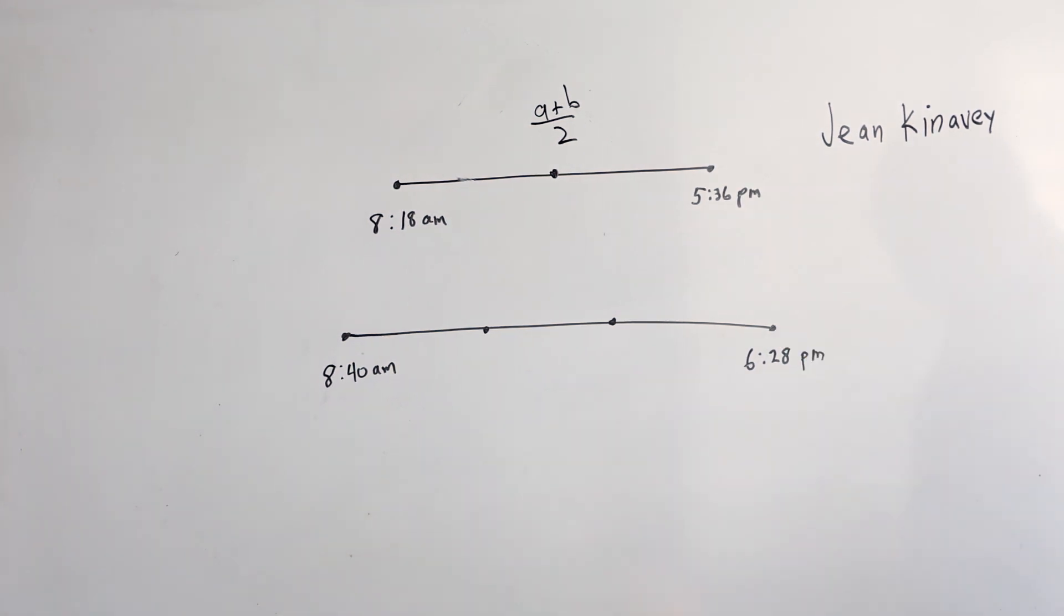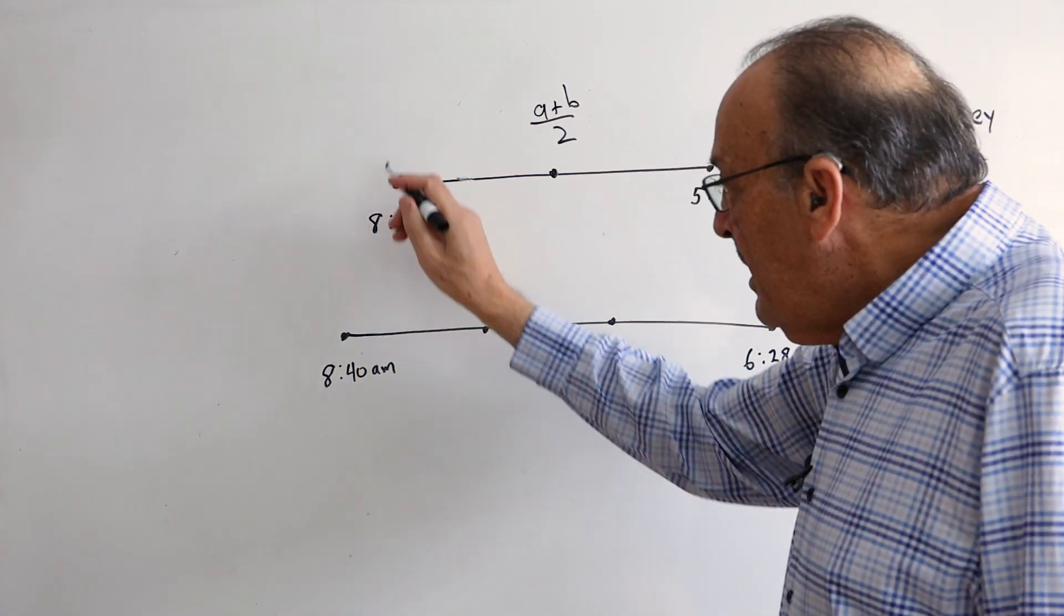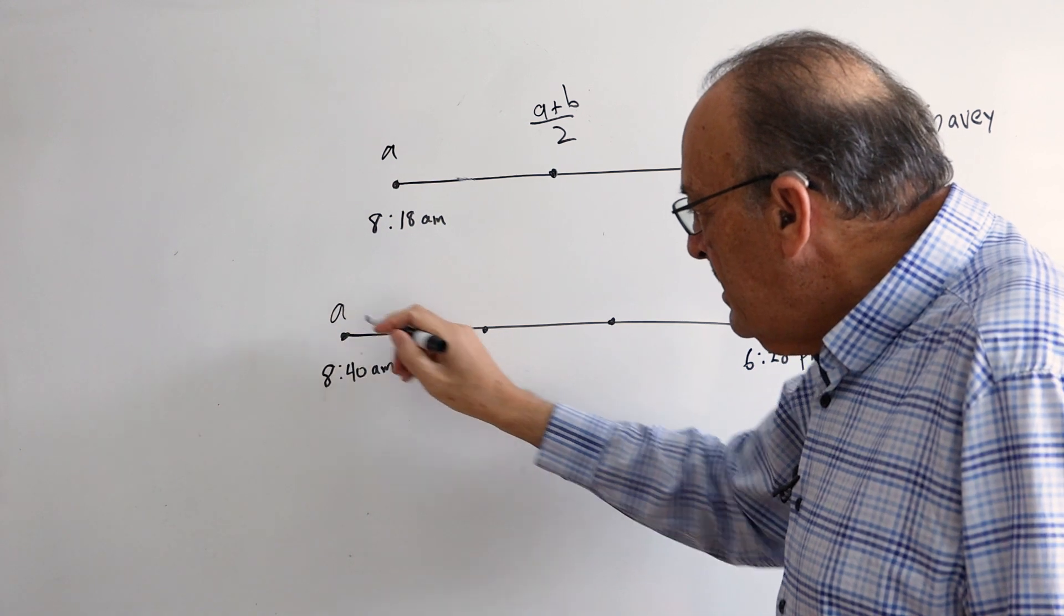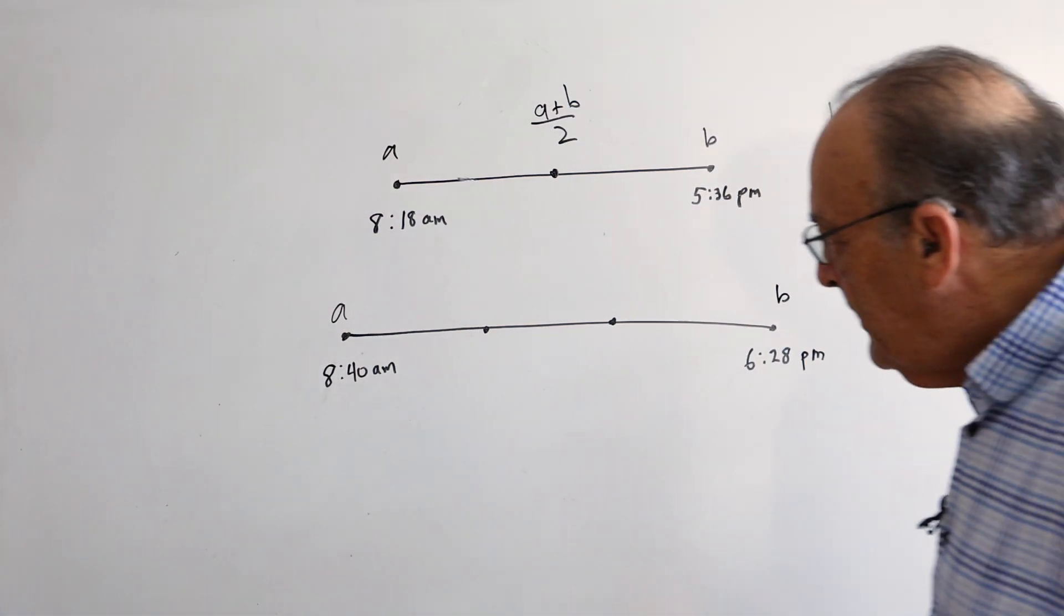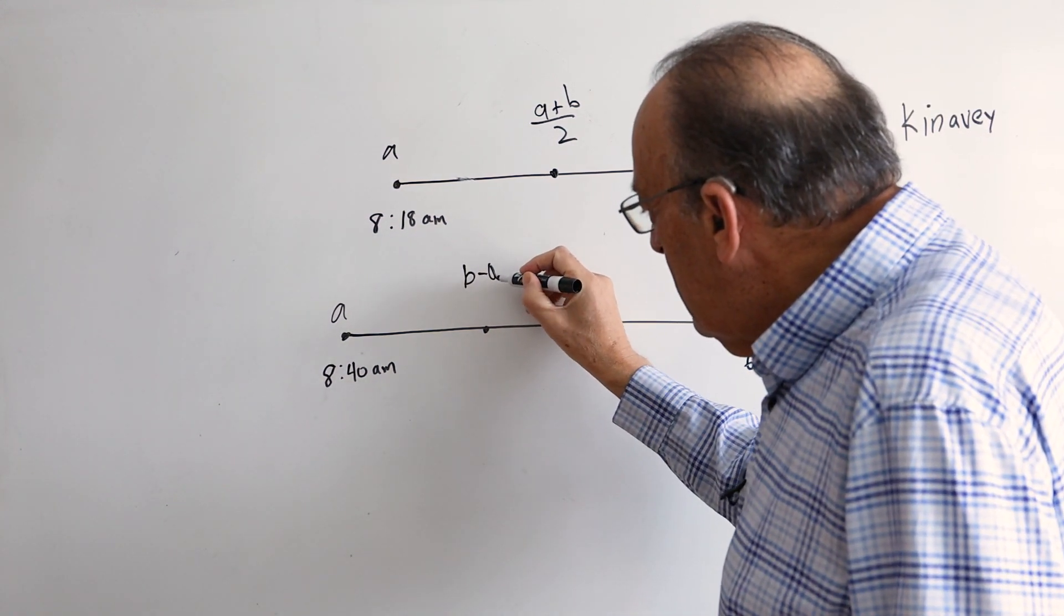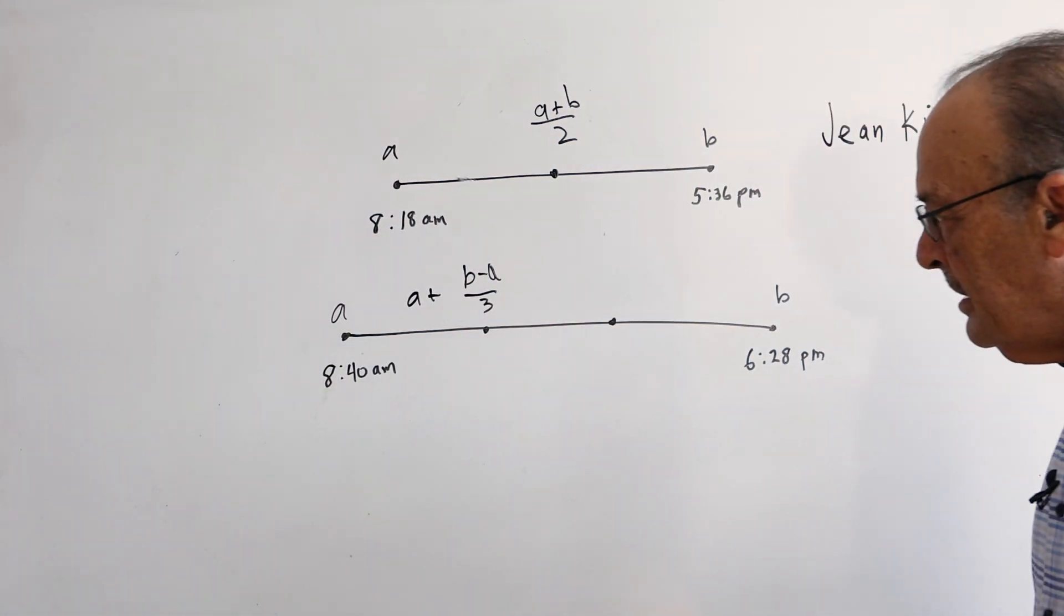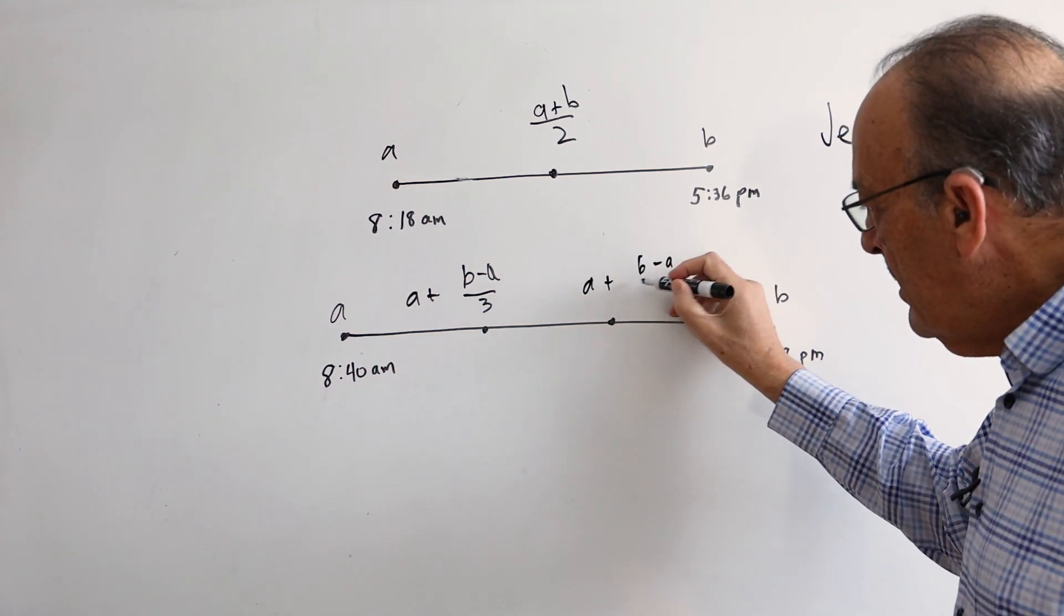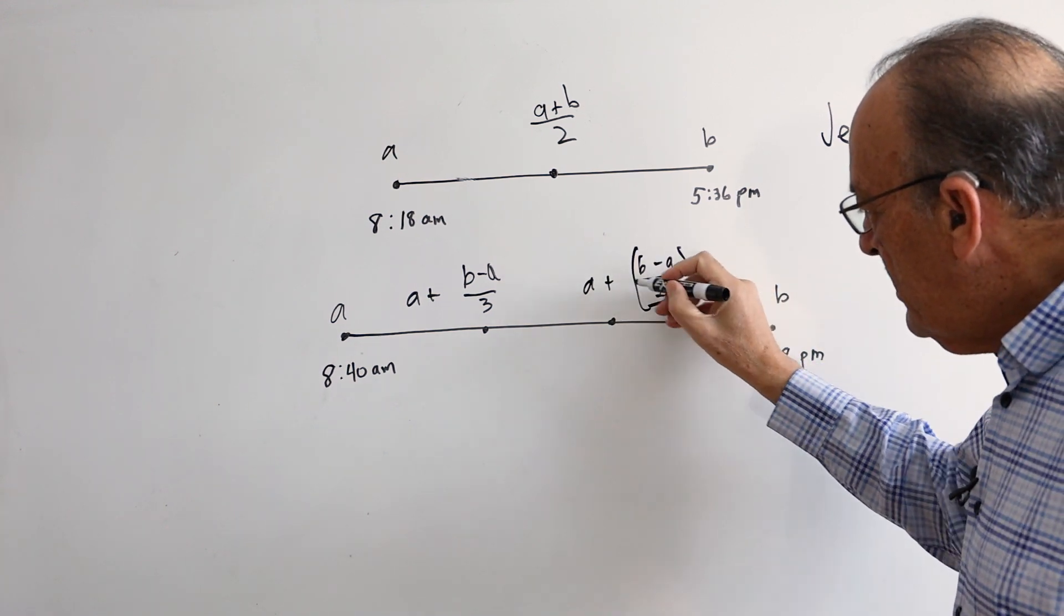Now on this other problem, we have two intermediate times, equally spaced. So if this is a and this is b, a plus b over 2. Now if this is a and this is b, I was using a different formula. I was going b minus a over 3 added to a. And here, I was going a plus b minus a over 3 times 2.